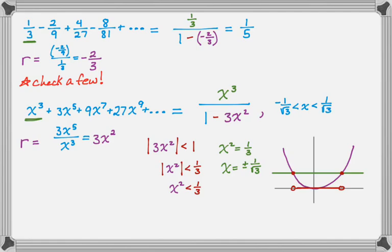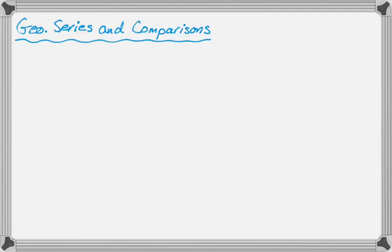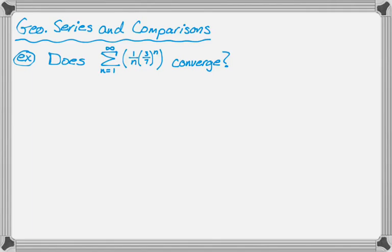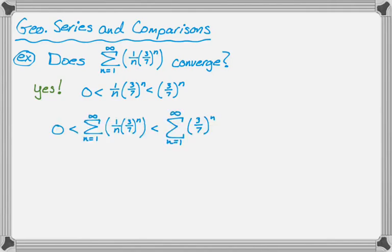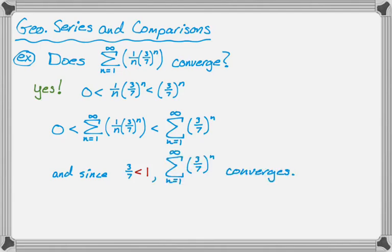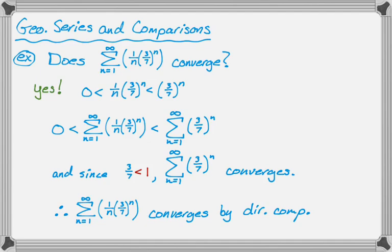You might also see geometric series involved with comparisons. For example: does the sum from 1 to infinity of 1 over n times 3 sevenths to the n converge? Since 1 over n times 3 sevenths to the n is less than 3 sevenths to the n, the summations follow that inequality. Since 3 sevenths is less than 1, the geometric series from 1 to infinity of 3 sevenths to the n converges. Therefore the given series converges by the direct comparison test.